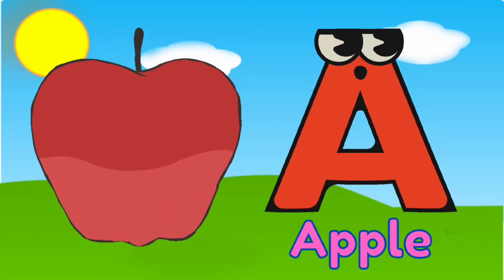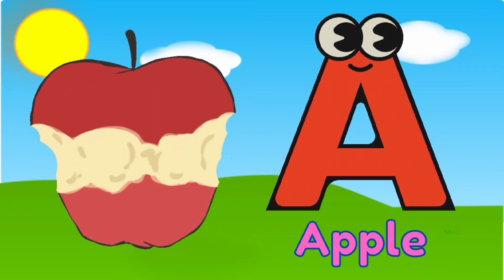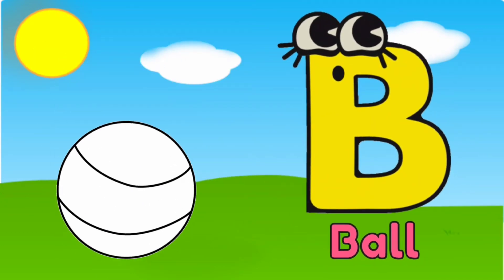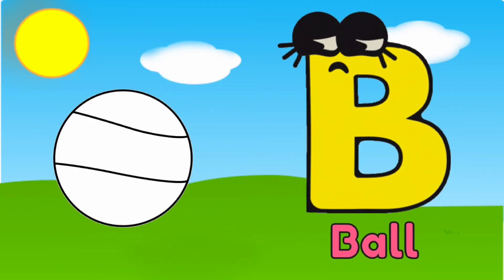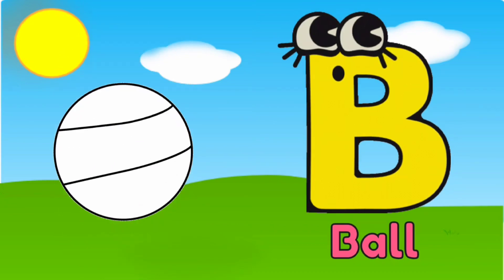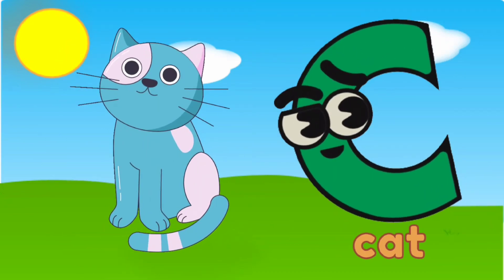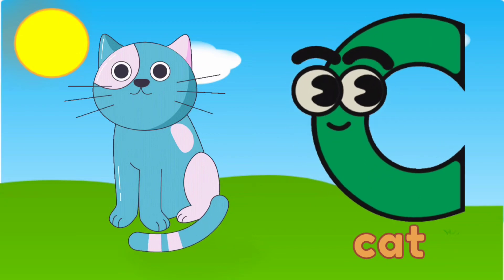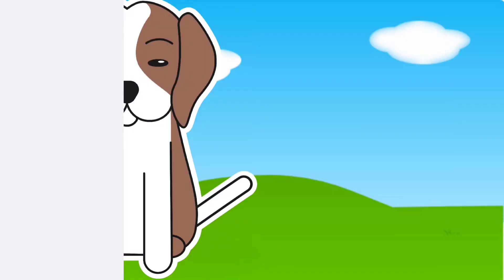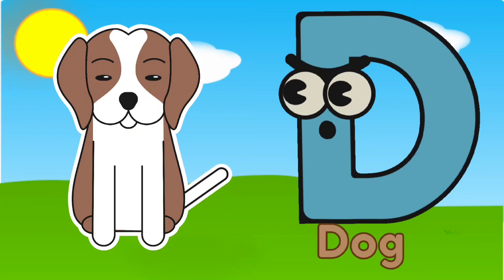A is for apple, a, a, apple. B is for ball, b, b, ball. C is for cat, k, k, cat. D is for doll, d, d, doll.